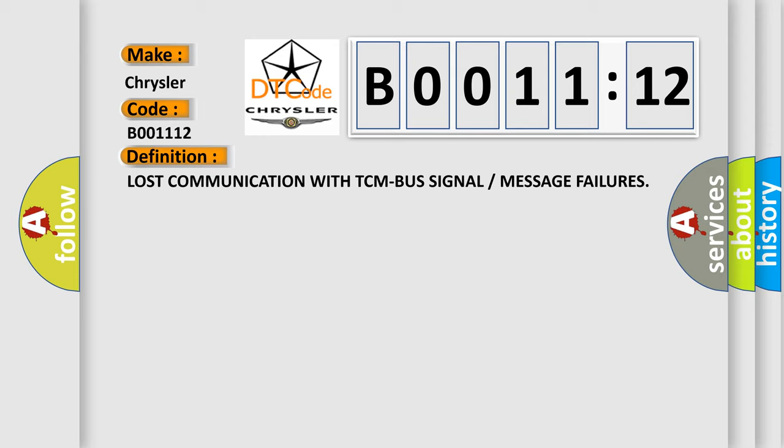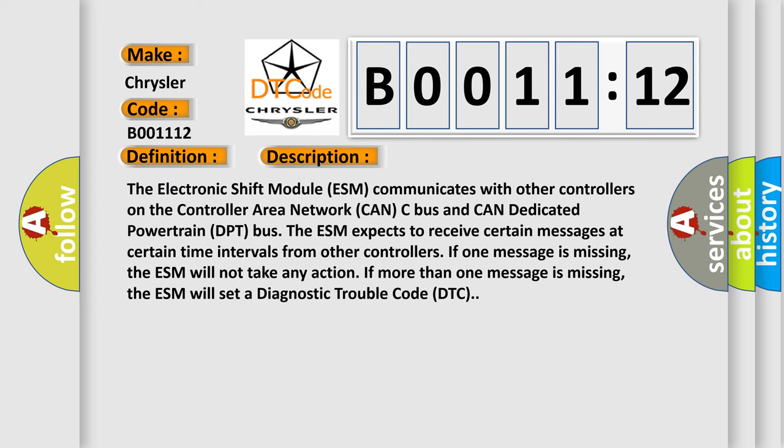And now this is a short description of this DTC code. The electronic shift module ESM communicates with other controllers on the controller area network CAN-C bus and CAN dedicated powertrain DPT bus. The ESM expects to receive certain messages at certain time intervals from other controllers. If one message is missing, the ESM will not take any action. If more than one message is missing, the ESM will set a Diagnostic Trouble Code DTC.